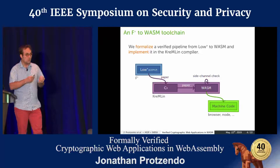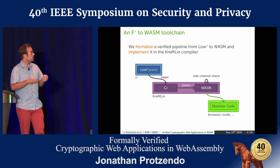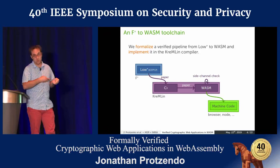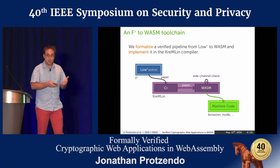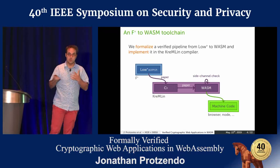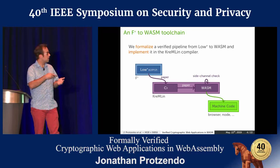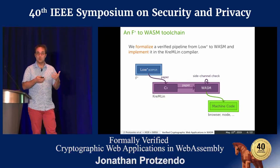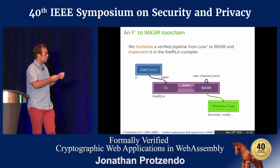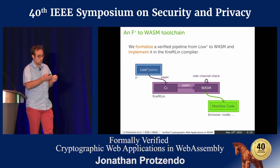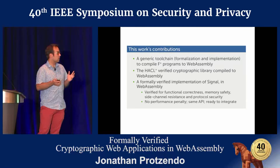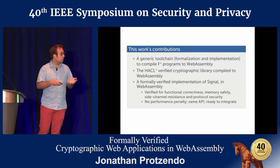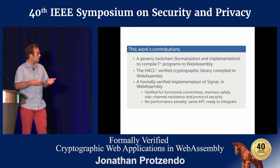What we're introducing in this paper is a brand new toolchain that allows you to compile from F-star — and in particular its subset called Lo-star — all the way to WebAssembly, with a paper formalization that tells you clearly what is happening during the compilation, and a companion implementation that allows you to actually execute a translation and compile your programs from F-star to WebAssembly. Our contributions are a generic toolchain, both in terms of formalization and implementation, that targets WebAssembly.